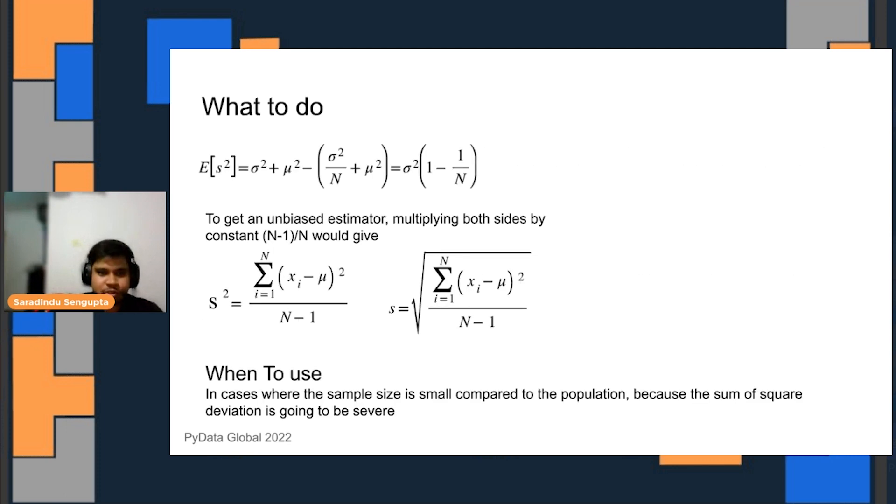To fix that issue, the easiest way to do is multiply the actual estimator by n over n-1. That would actually remove the bias and give an unbiased estimator for both standard deviation as well as variance.